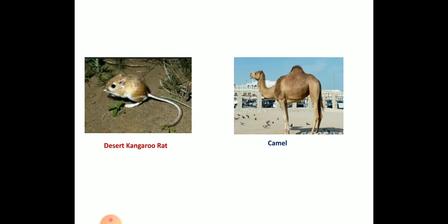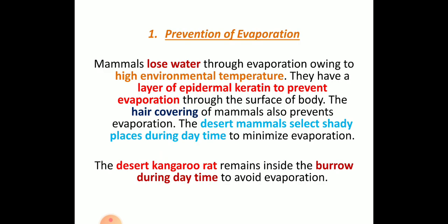Very important in this session, we will be discussing about the desert kangaroo rat and the camel. In your syllabus, they will give examples and ask you to write the mechanism by which mammals overcome osmoregulation in different types of habitats. We will see in detail these mechanisms. The first one is prevention of evaporation.